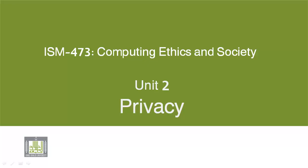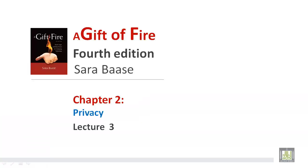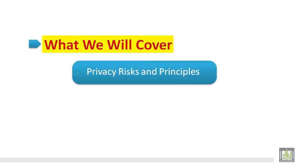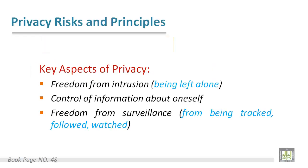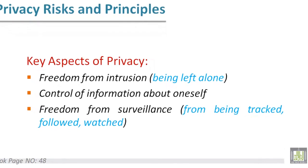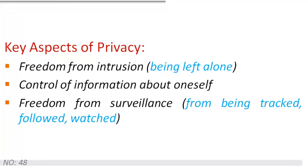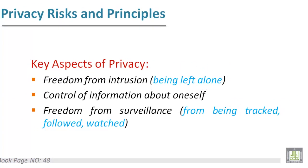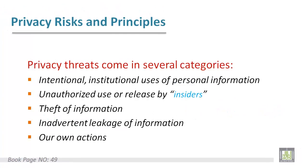Hello everybody, welcome to Lecture 3 of our course Computing Ethics and Society. In this lecture we are going to start Chapter 2, which talks about privacy. We will cover privacy risks and principles. Key aspects of privacy include three main things: first, freedom from intrusion; second, control of information about oneself; and third, freedom from surveillance.